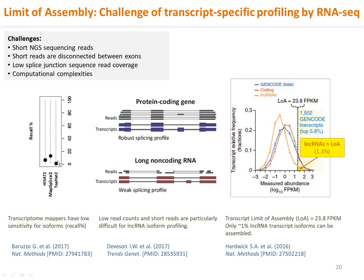Transcript isoforms are expressed at different levels, and minor species isoforms cannot receive enough read counts for quantification. As shown in the diagram, lncRNA exon coverage is not sufficient for defining splice junctions or their quantification, whereas mRNAs are okay. The read counts required for transcript isoform assembly — the limit of assembly, or LOA — has been experimentally determined to be 23.8 FPKM in the Nature Methods paper. Very few lncRNA isoforms, only about 1.3%, can be assembled for further profiling.